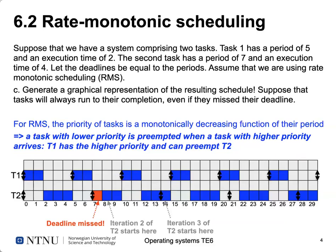The next question was to generate a graphical representation of the resulting schedule, assuming a task runs to completion even if it misses its deadline. For RMS, task priority decreases monotonically with period — the larger the period, the lower the priority. A task with lower priority is preempted when a higher-priority task arrives. T1 has the shorter period, so it has higher priority and can preempt T2.